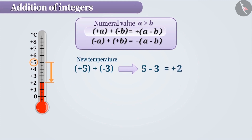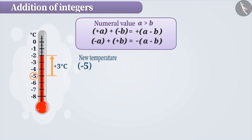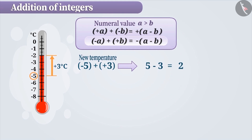Similarly, if we have to find minus 5 plus plus 3, then we first carry out 5 minus 3 which gives the result 2. Then include the sign of the larger number, that is, the minus sign of minus 5. Therefore, the answer is minus 2.